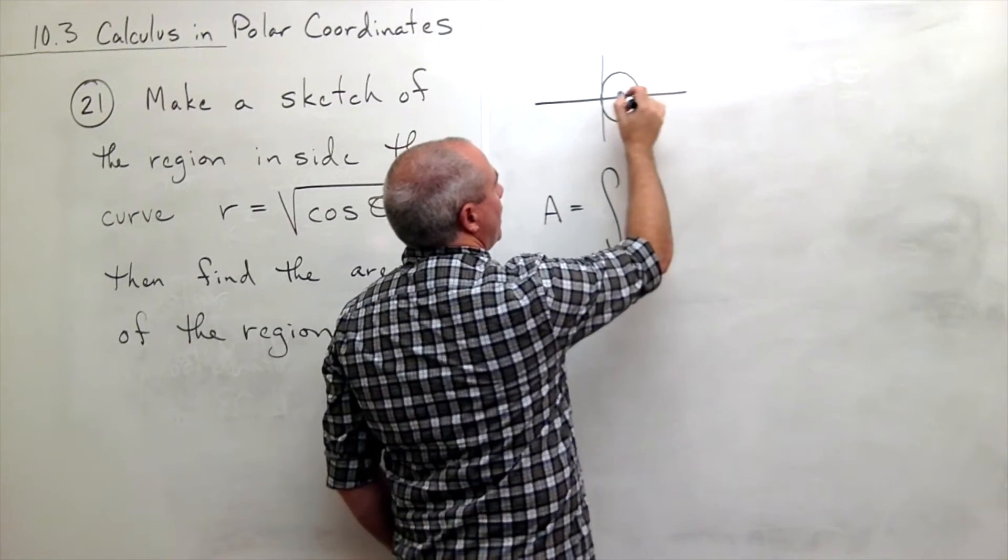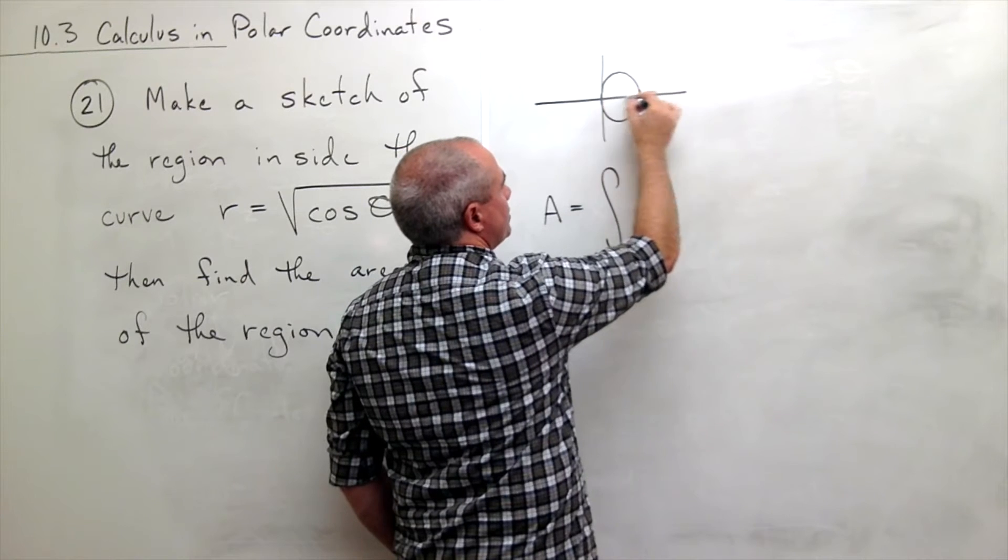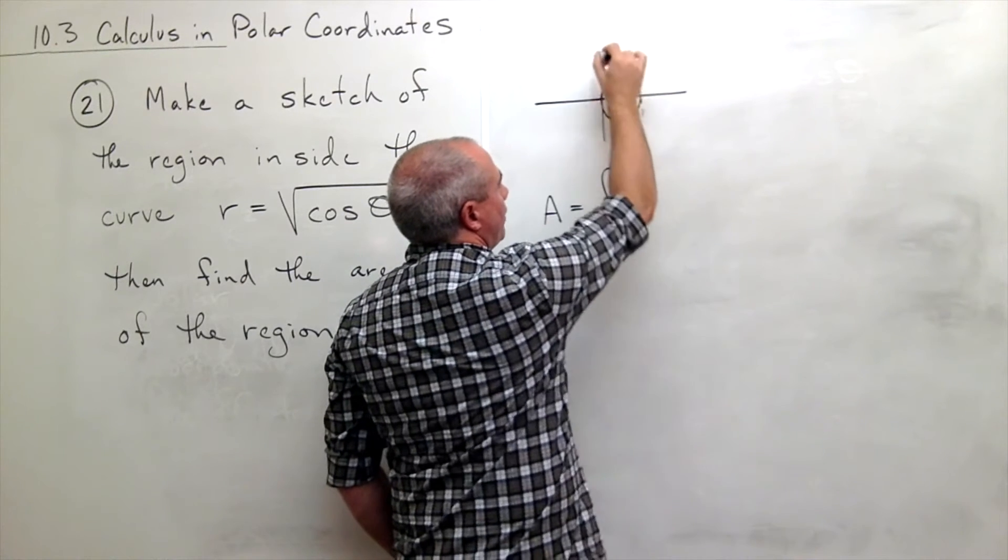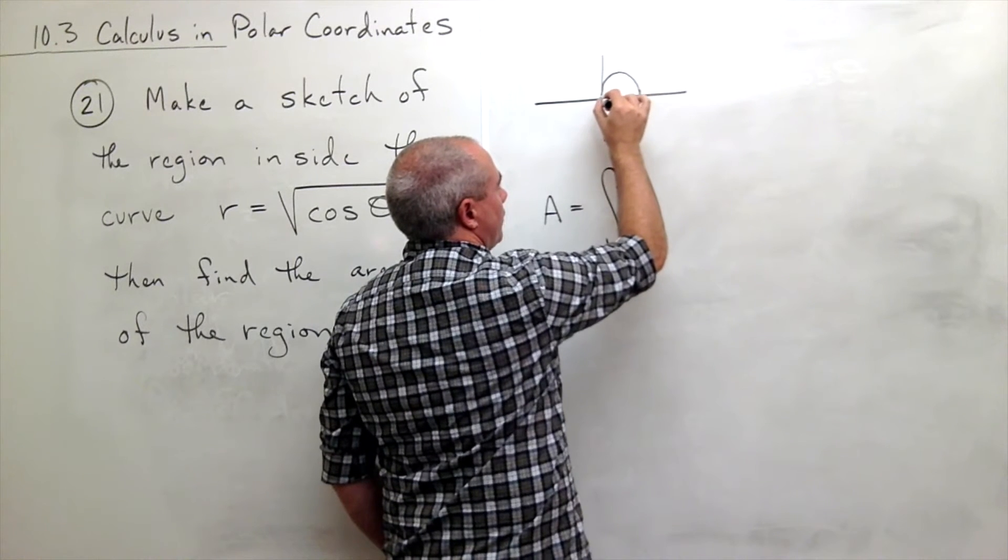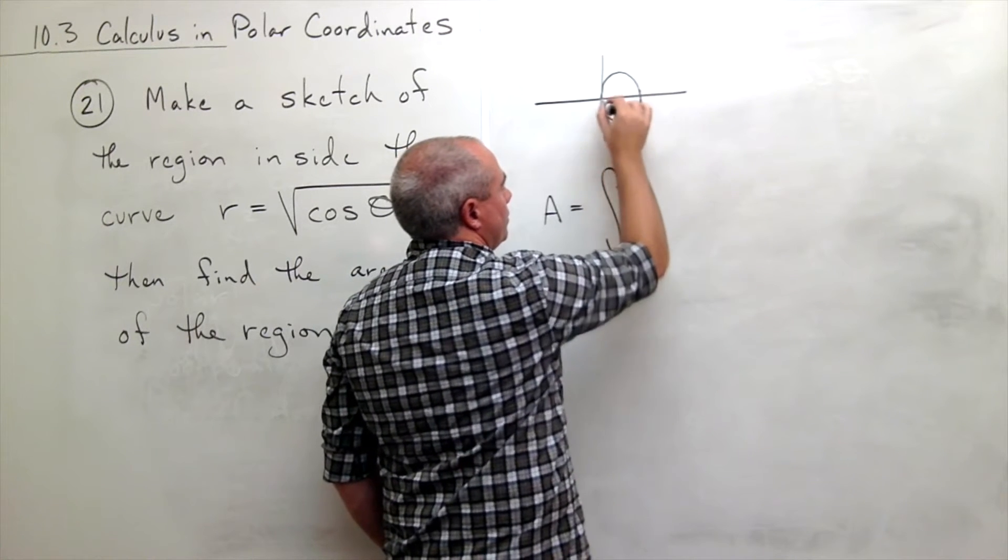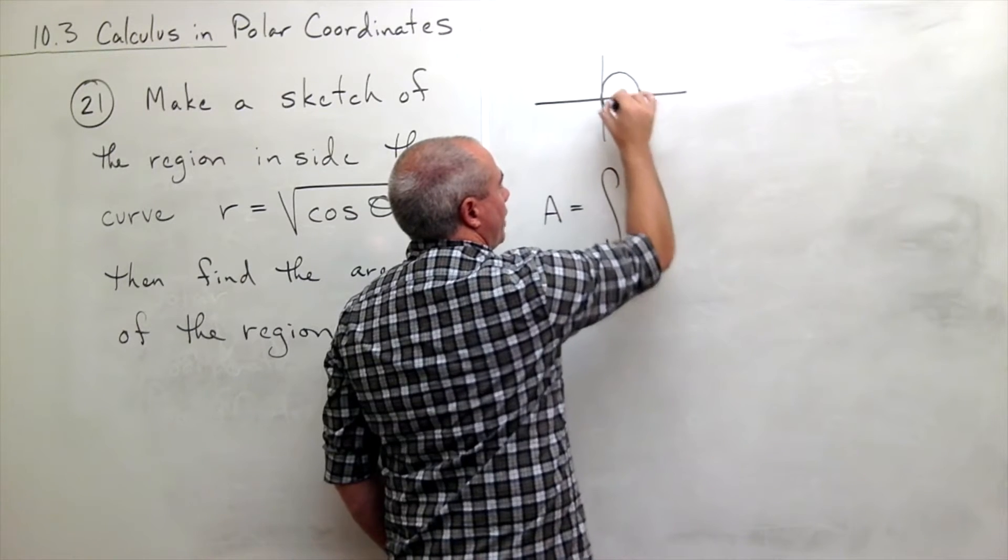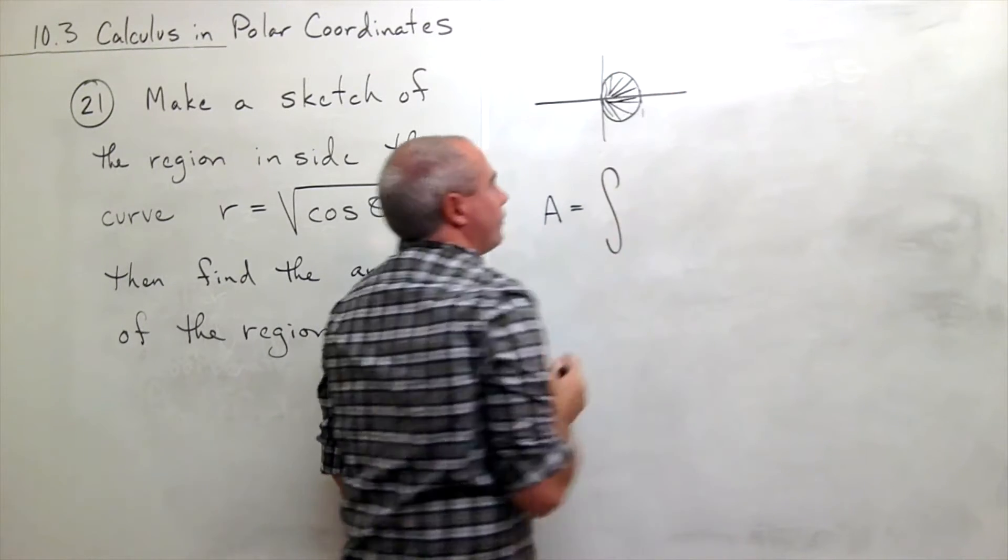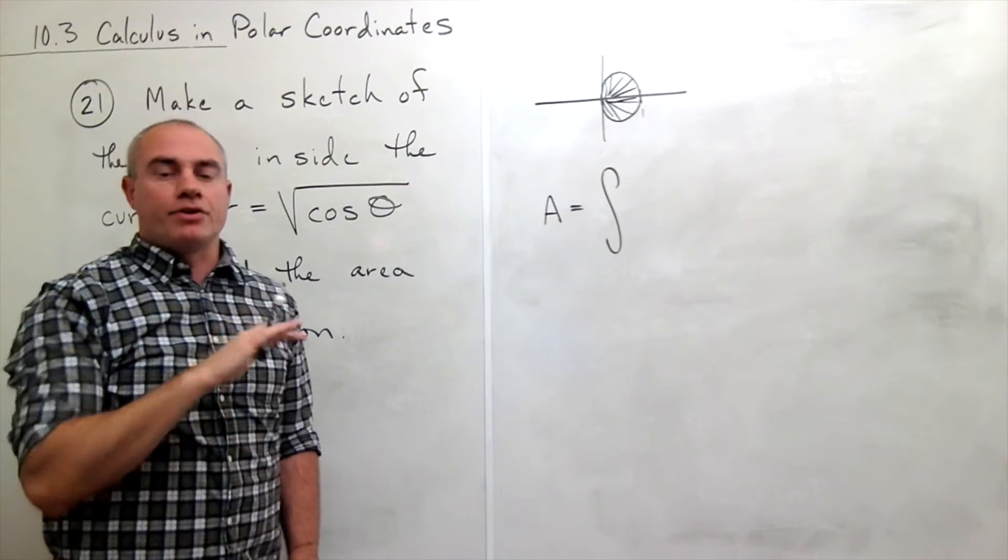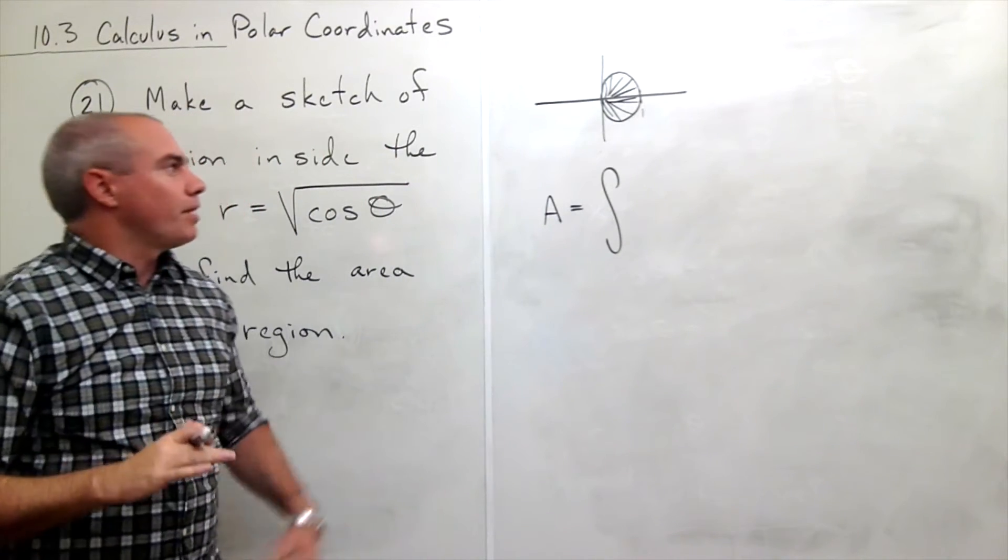this thing kind of ranges—well, here's zero, and here's pi over two, down here's negative pi over two—so this kind of ranges from negative pi over two. Thetas go from negative pi over two until they get to pi over two.